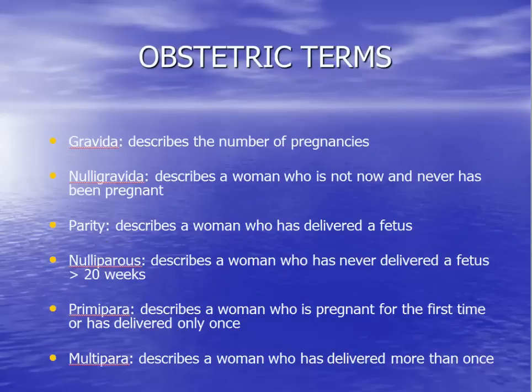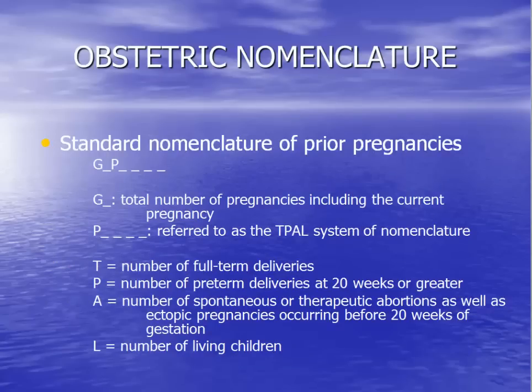Here are some important obstetric terms that clinicians use to describe a woman based on her previous pregnancy history. The standard nomenclature of prior pregnancies includes gravidity and parity. G stands for gravidity, which is the number of times a patient has been pregnant. P stands for parity, which is the number of deliveries the patient has completed. A woman currently pregnant for the first time would be considered a Gravida 1, Para 0, or G1P0.